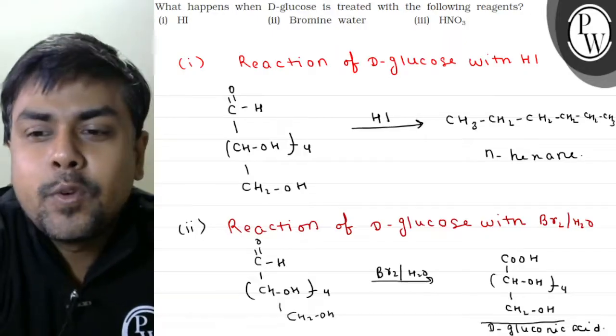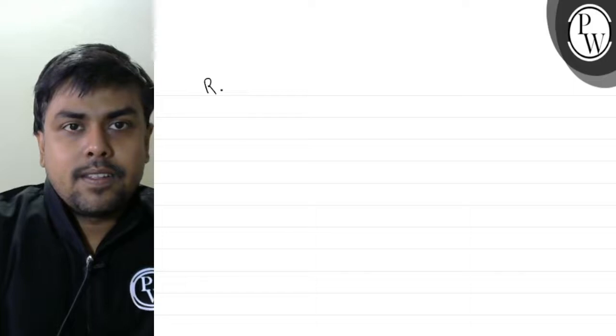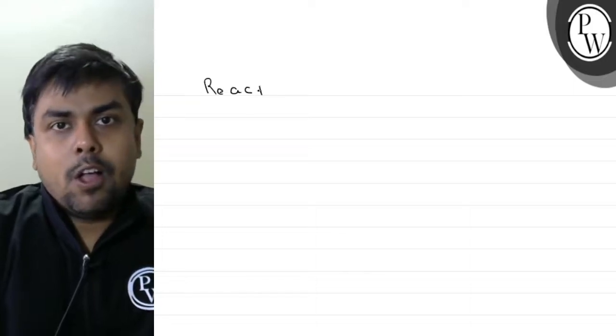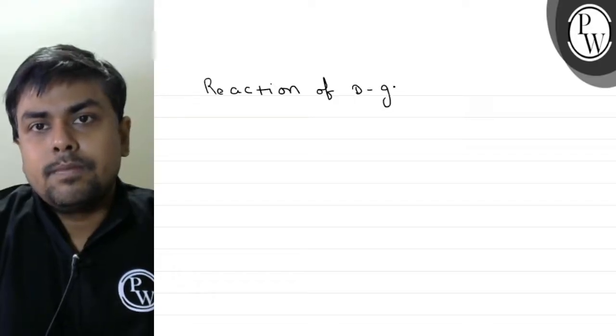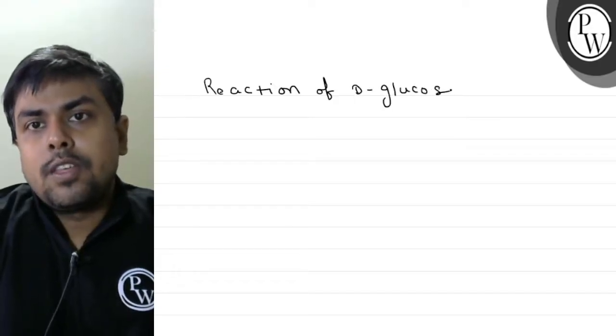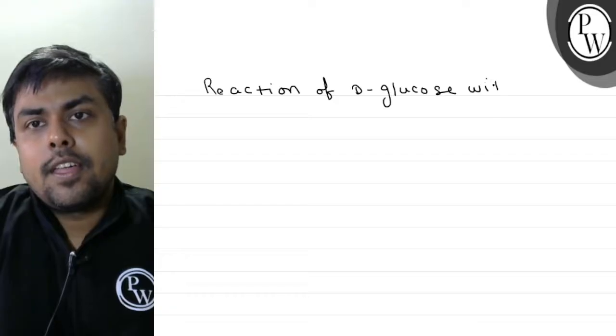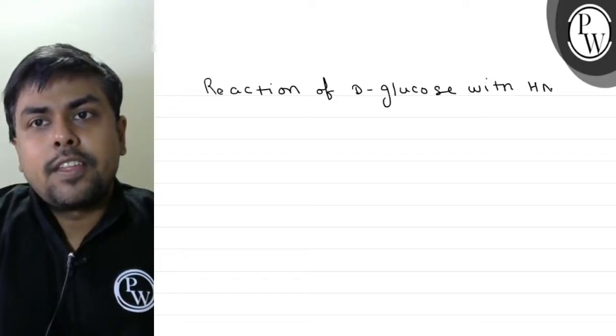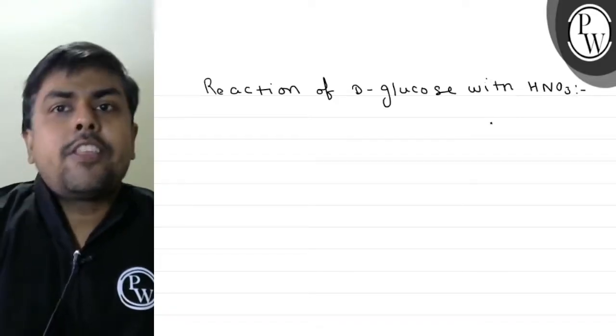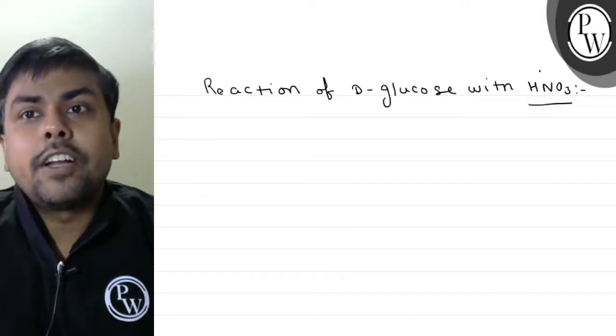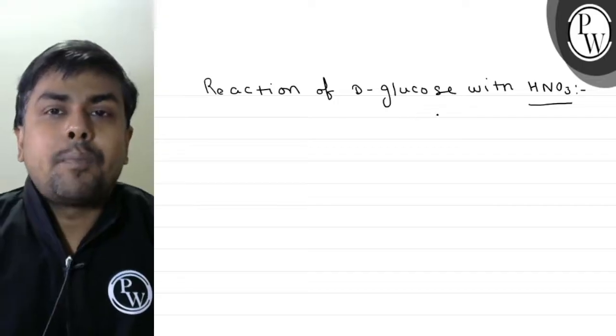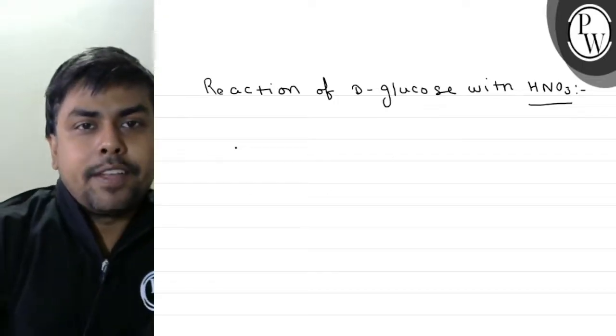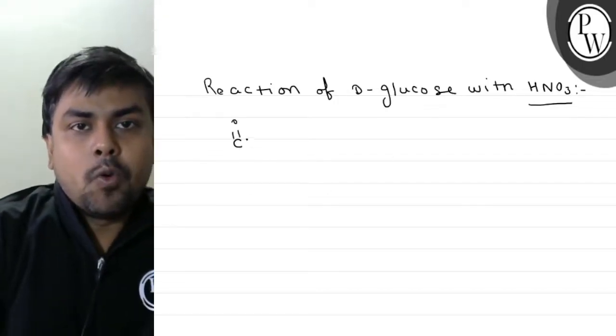Reaction 3: Reaction of D-glucose with HNO3. It is an oxidizing agent. What is the reaction of D-glucose? I am having C=O.